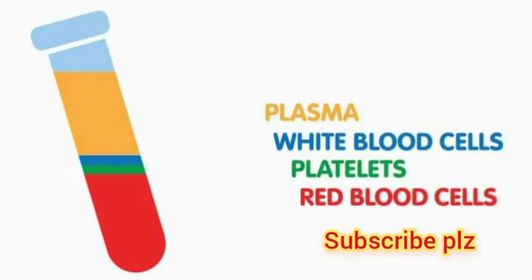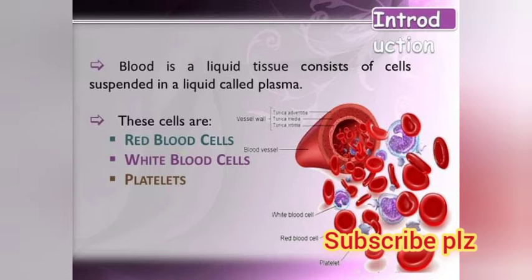Today we will discuss plasma, white blood cells, platelets, and red blood cells, which are the components of blood. Blood is a liquid tissue consisting of cells suspended in a liquid called plasma. These cells are red blood cells, white blood cells, and platelets, as you can see in the diagram.